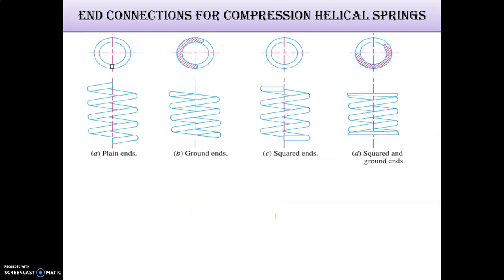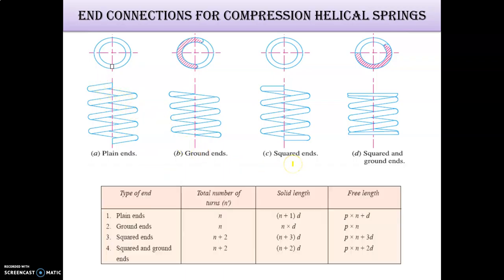These are the terms. This is the plain end, and this is the ground end. There is a table for it: for plain ends, n is the number of turns, solid length is (n + 1) × d, and free length is p × n + d. Different types of ends are shown here — plain end, ground end, and square end.